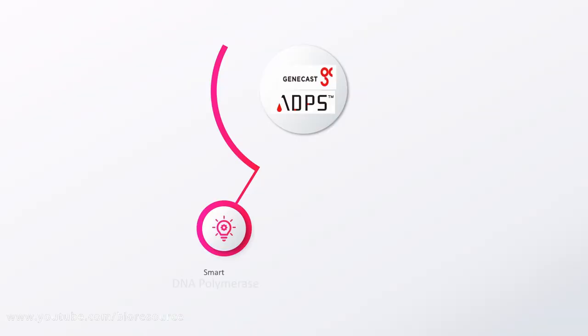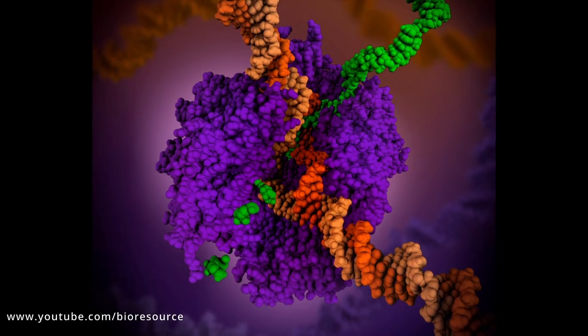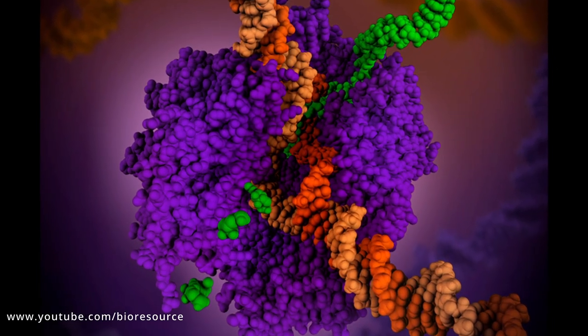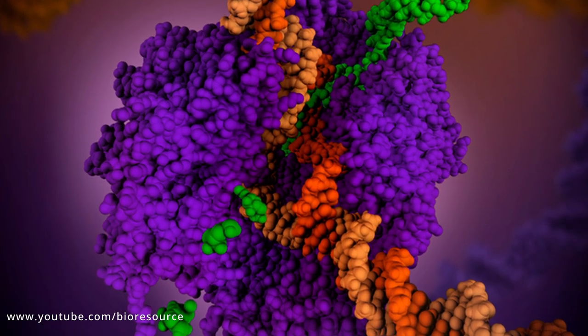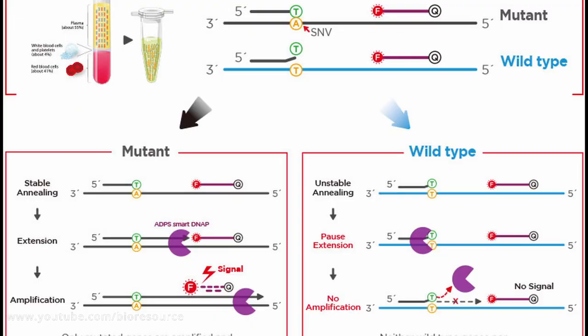The GeneCast ADPS system has three major components: the smart DNA polymerase, primer probe design, and the optimized buffer system. The key component of ADPS is the smart DNA polymerase. It's an engineered DNA polymerase which can detect single nucleotide mismatches and thereby selectively amplify the mutant genes only while leaving the wild-type genes intact.